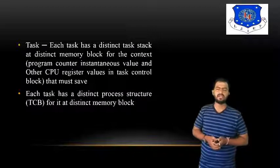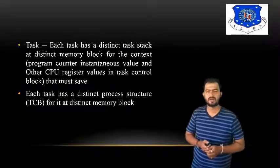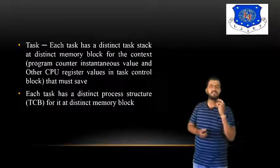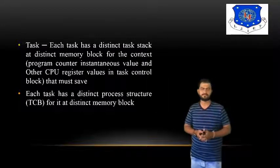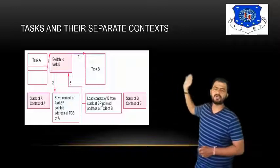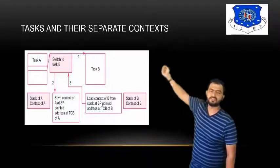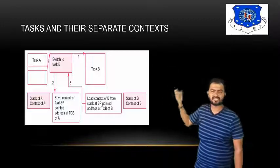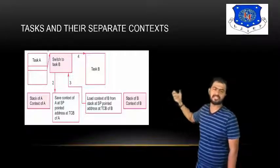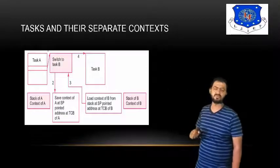Each task has a distinct task stack at a distinct memory block for context. Each task has a distinct process structure — in terms of the PCB (process control block) — to provide distinct memory management via the task control block. For example, with task A and task B: task A's stack and context are saved, the stack pointer is updated, context of task B is loaded, and then task B is executed.